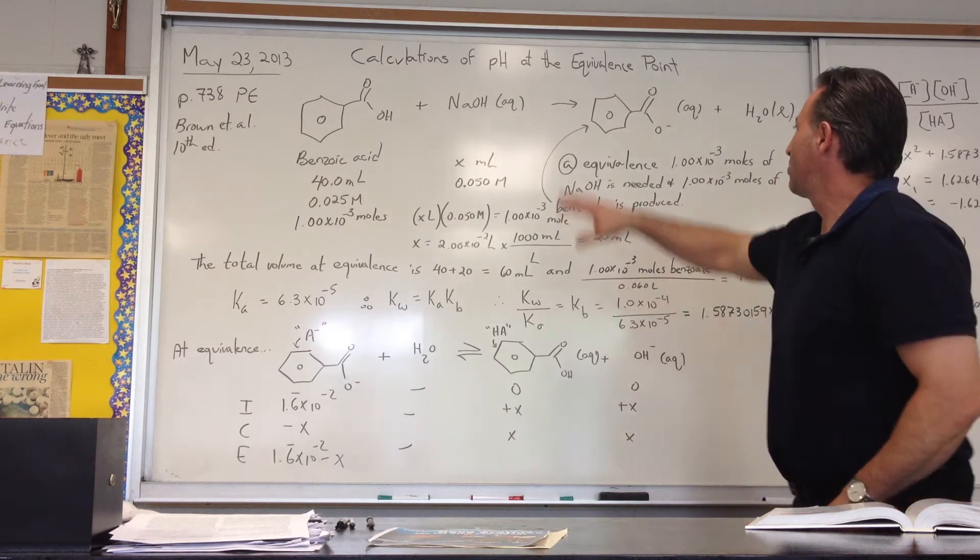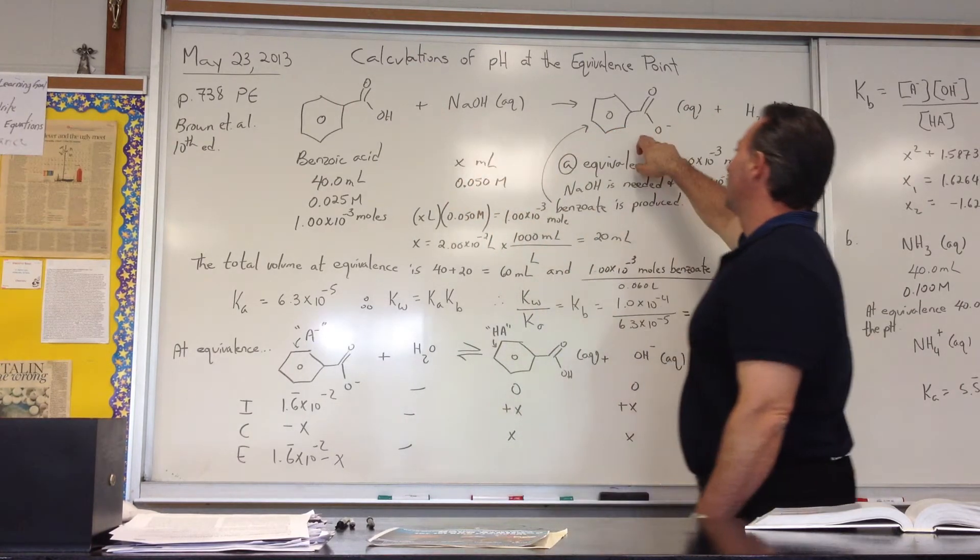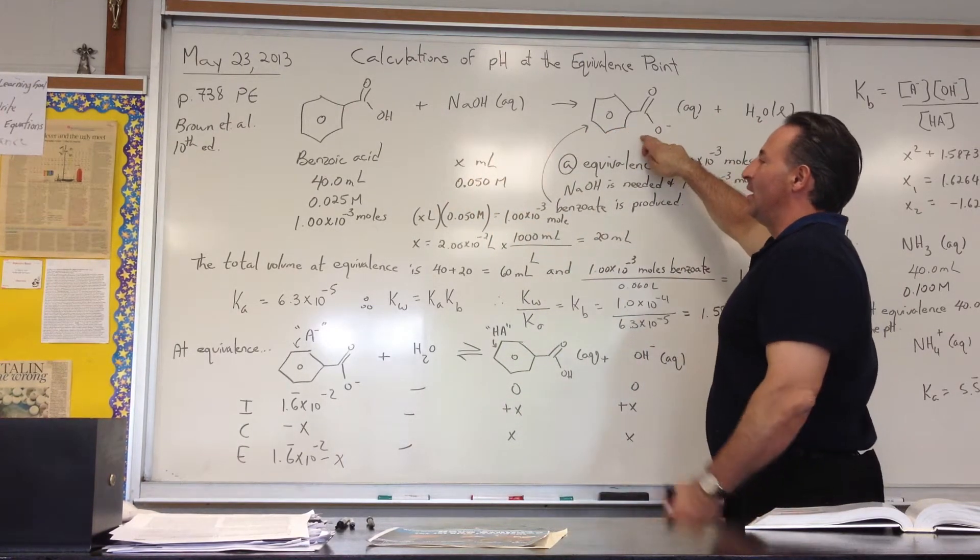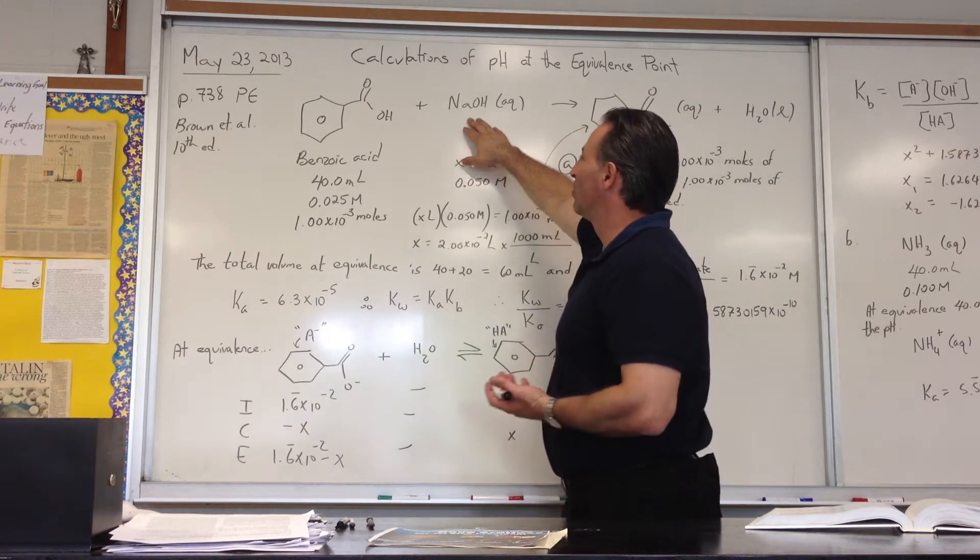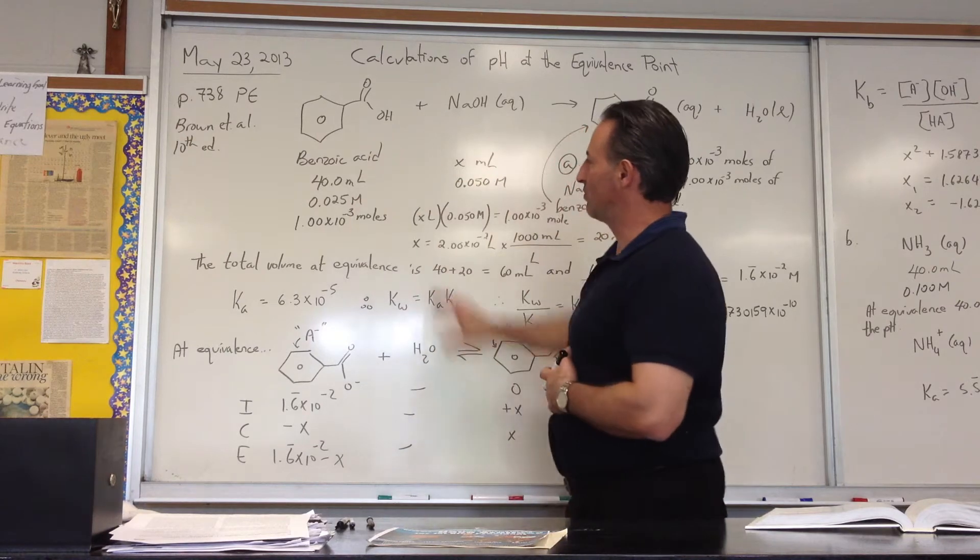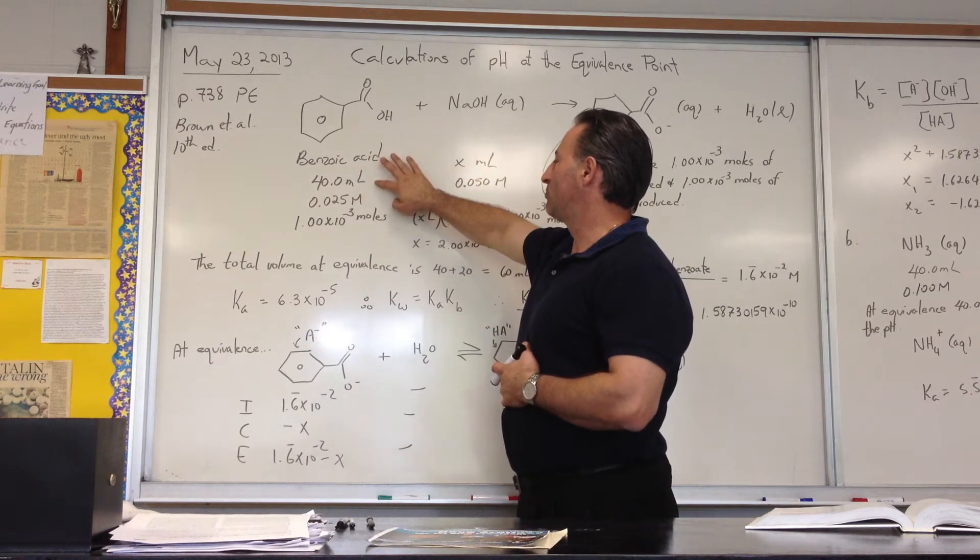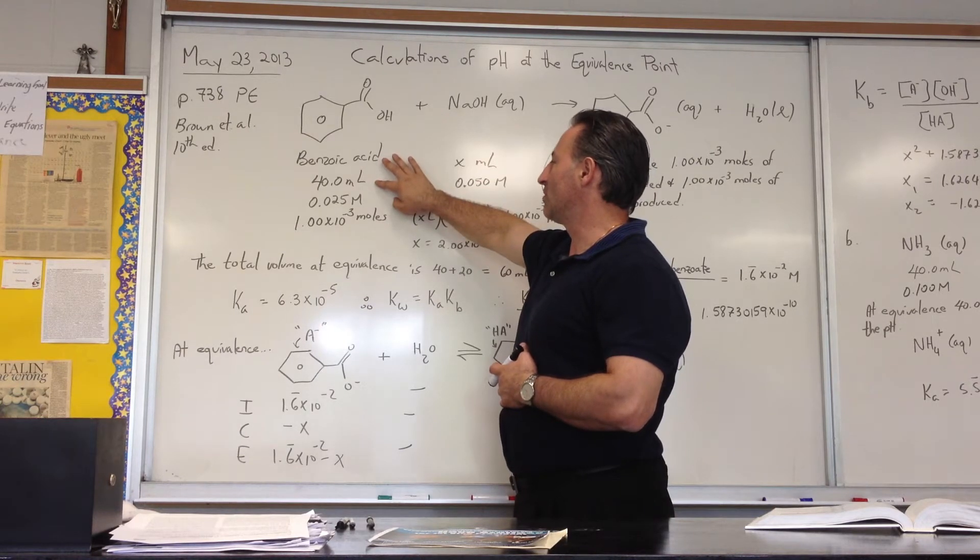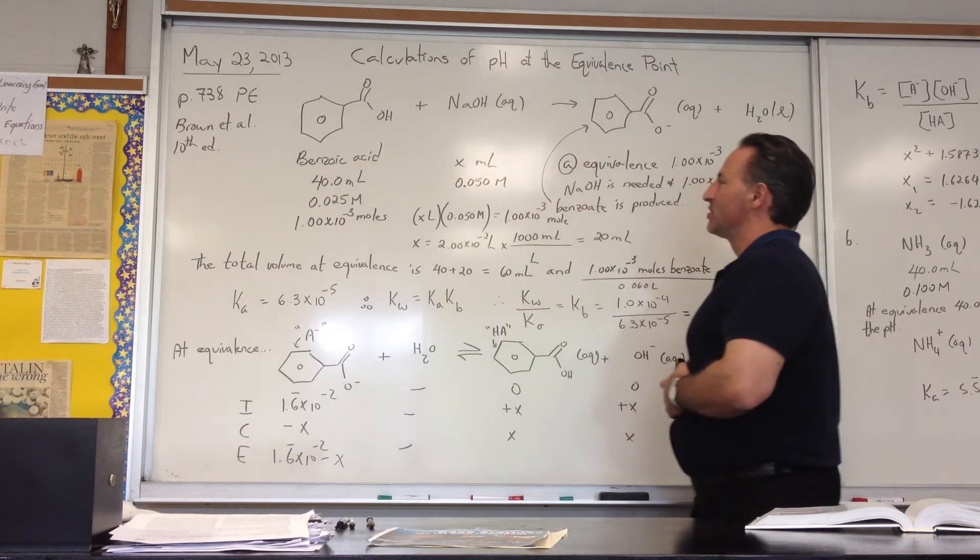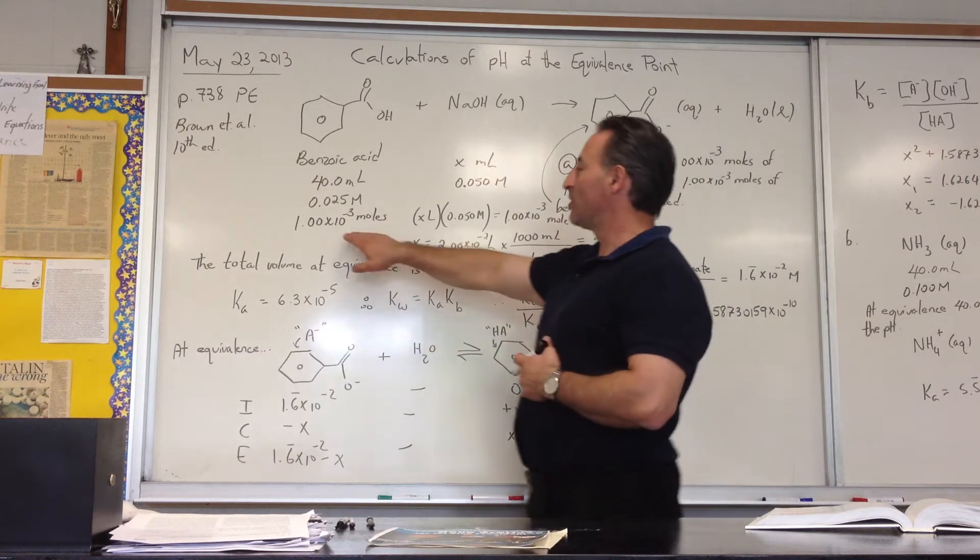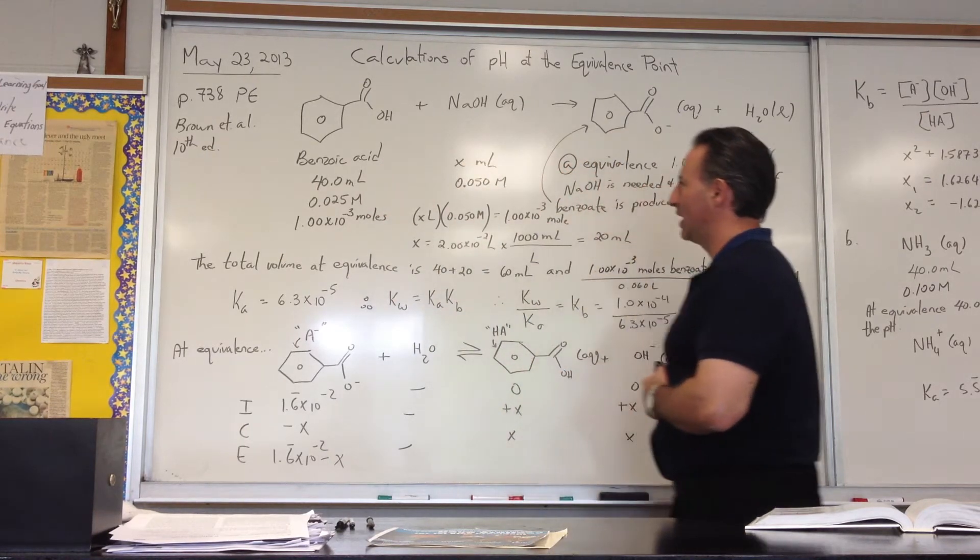So we begin by just portraying what happens during the titration. When sodium hydroxide is added to benzoic acid, we form the benzoate anion, and because it is a titration, we're going to have the same amount of moles of sodium hydroxide as there are moles of benzoic acid. So we find out, first thing, how many moles of benzoic acid? 40 mL is 0.04 liters times the molarity of 0.025 is 1.0 times 10 to the minus 3 moles of benzoic acid.